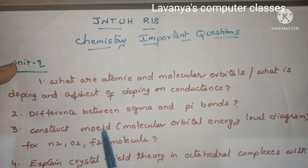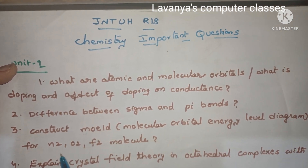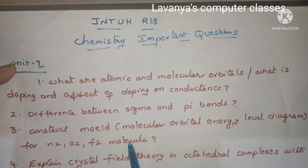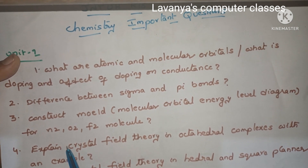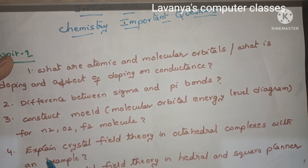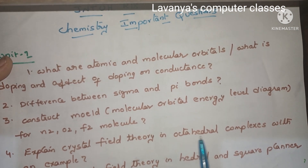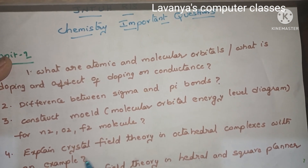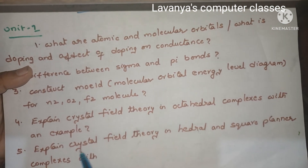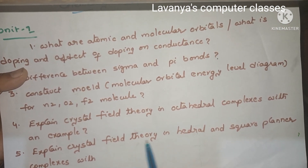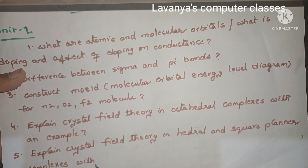Third one is: construct the molecular orbital energy level diagram (MOEL diagram) for N2, O2, and F2 molecules. Next one is: explain crystal field theory in octahedral complexes with an example. Next question is: explain crystal field theory in tetrahedral and square planar complexes with an example.